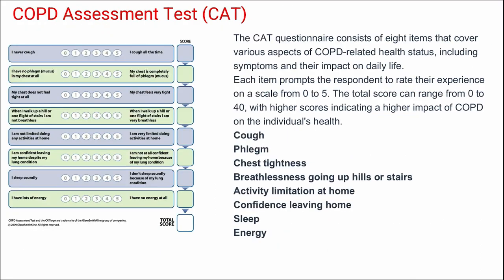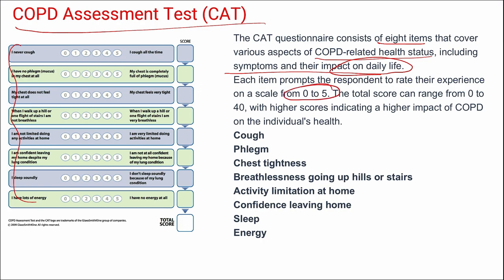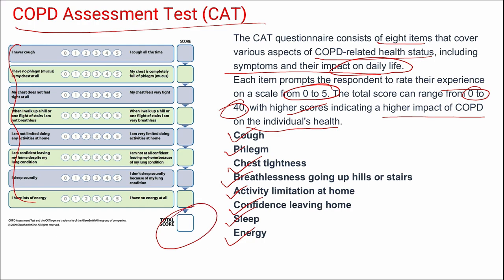Next is the COPD Assessment Test (CAT). It consists of 8 items covering COPD-related health status including symptoms and impact on daily life. Each item has a maximum Likert score of 5 and a minimum of 0, giving a total range of 0 to 40. Higher scores indicate a higher impact of COPD on the individual's health. The 8 questions focus on cough, phlegm, chest tightness, breathlessness, activity limitation at home, confidence leaving home, sleep, and energy.